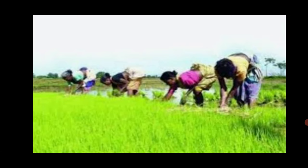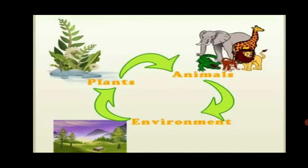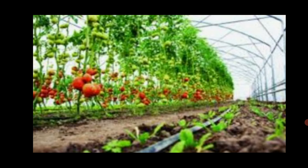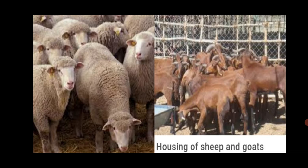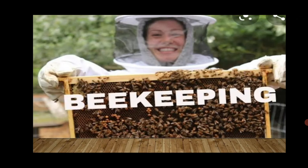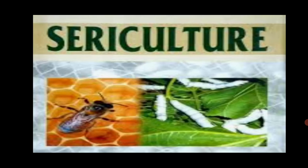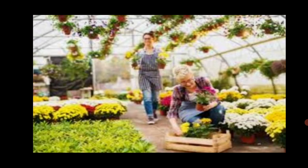These occupations are supplementary to the cultivation of crops. Supplementary means to support, for extra support. Agriculture has a wide scope. For our basic needs of food and clothing, we make use of plants and animals. Besides the cultivation of different crops, rearing cattle, sheep and goats, maintaining poultry farms, keeping bees (beekeeping), sericulture — which is the cultivation of silkworm to produce silk.